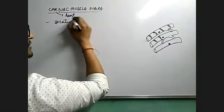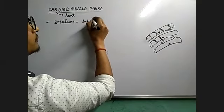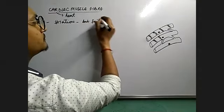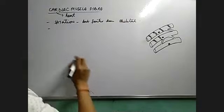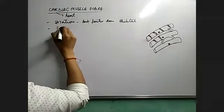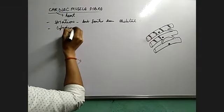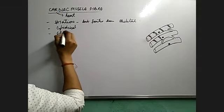The striations are fainter than skeletal muscles. You can see the body is cylindrical, it is elongated in shape.